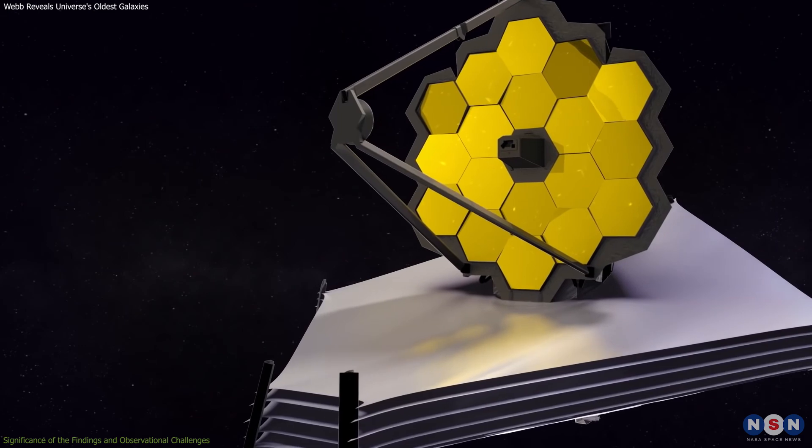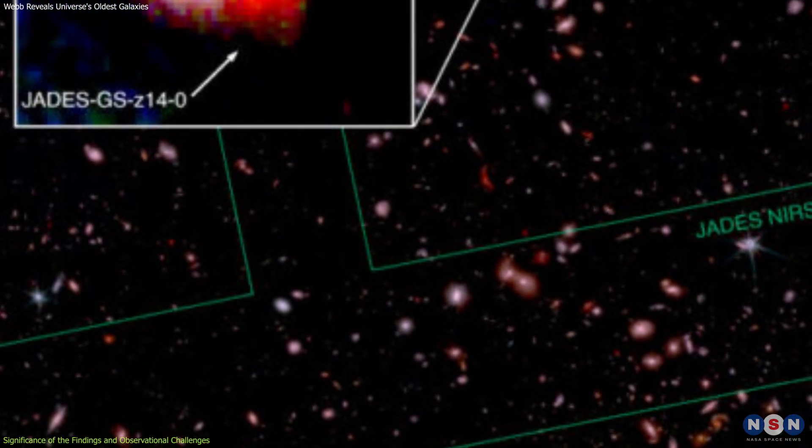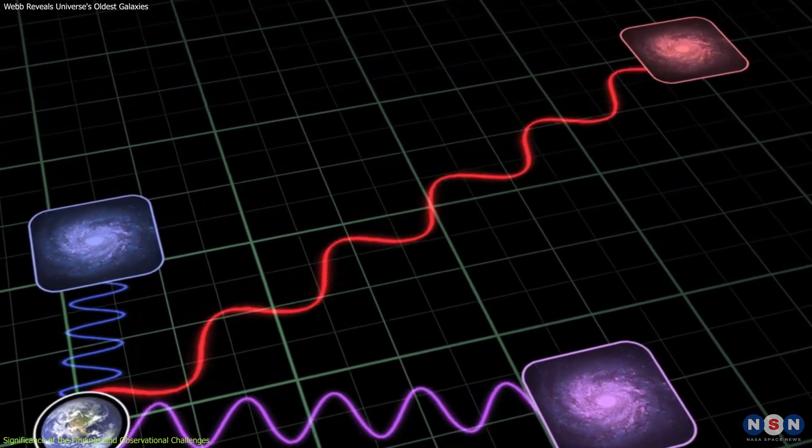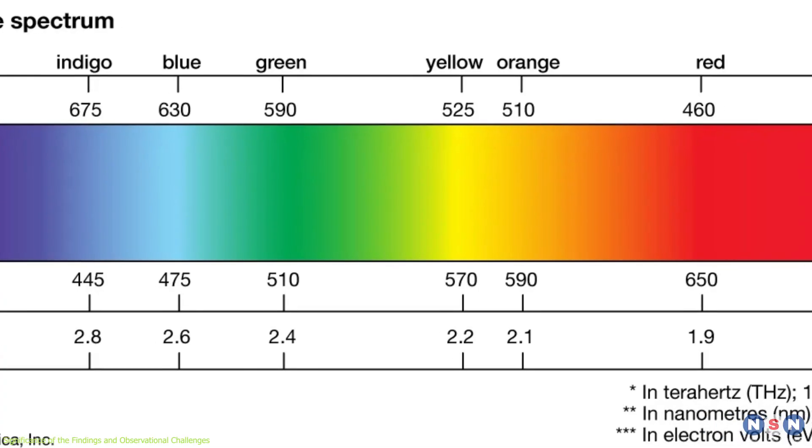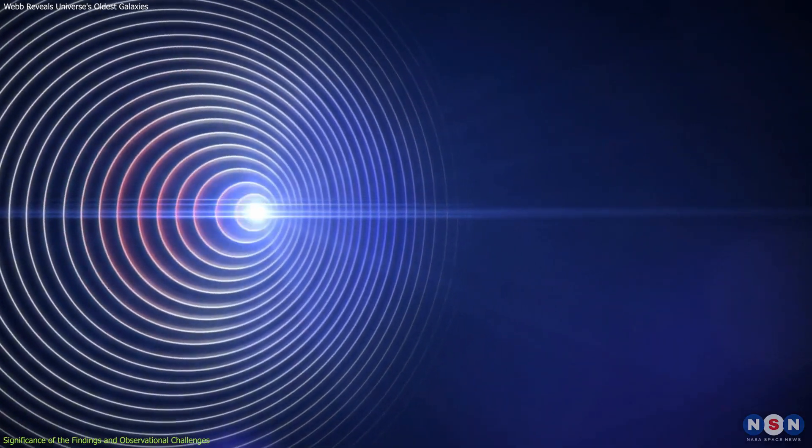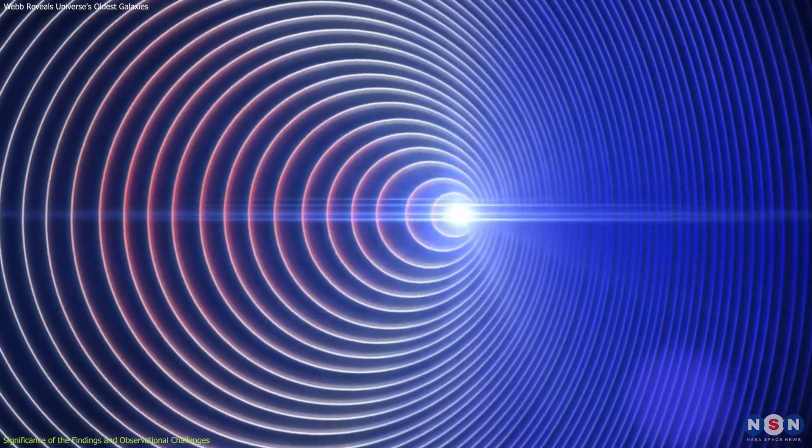Webb's infrared capabilities are crucial due to the extreme redshifts observed in galaxies like these two galaxies. Redshift occurs when light from a galaxy is stretched to longer wavelengths as the galaxy moves away from us, shifting towards the red end of the spectrum. This phenomenon is similar to the Doppler effect with sound, where the pitch of an ambulance siren drops as it moves away, but with light.